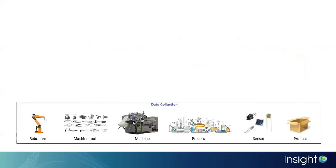In order to construct a knowledge graph for an Industry 4.0 production line, we collected data generated in a production line by a robotic arm, machine tools, machine processes, sensors, and products.